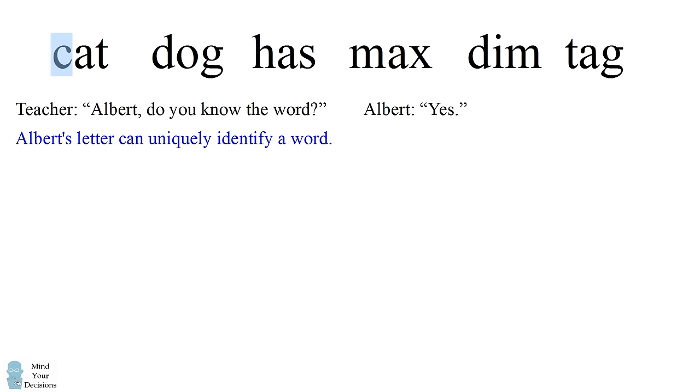In contrast, suppose Albert had gotten the letter A. Well, the letter A appears in multiple words, so there would have been no way for Albert to figure out which word was the word that they got. Since Albert replied he was able to identify the word, that means he did not get the letter A.